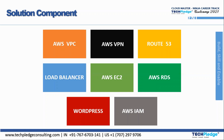EC2 is where we can launch instances, which are virtual servers. AWS RDS is the Relational Database Service provided by AWS. AWS Virtual Private Cloud creates a logically isolated virtual environment for the service. AWS VPN provides encrypted connections between network devices — whatever devices are present will undergo a Virtual Private Network, an encrypted network.